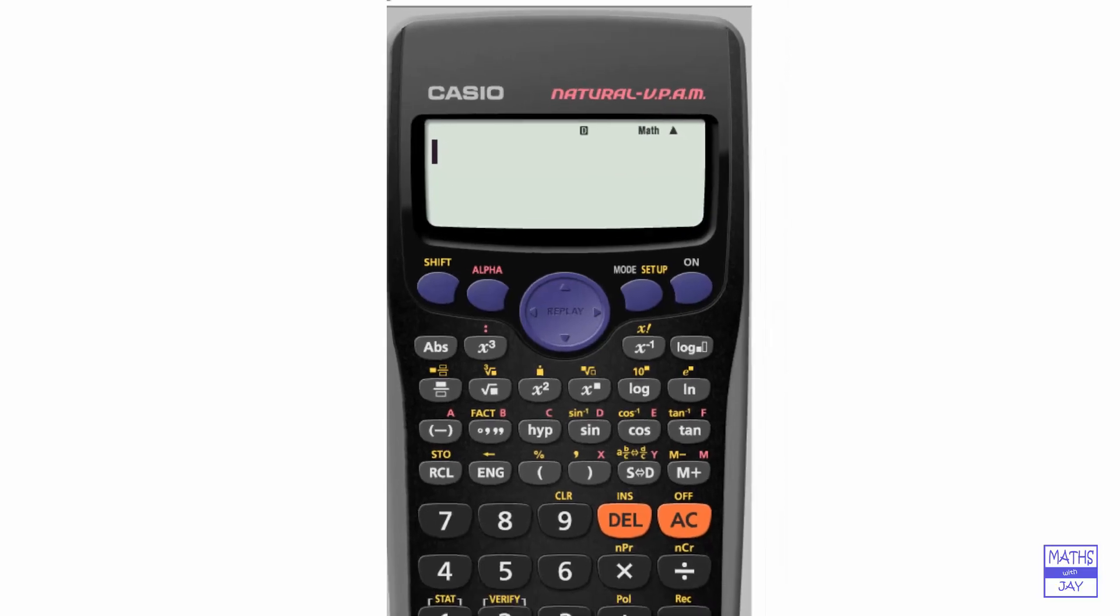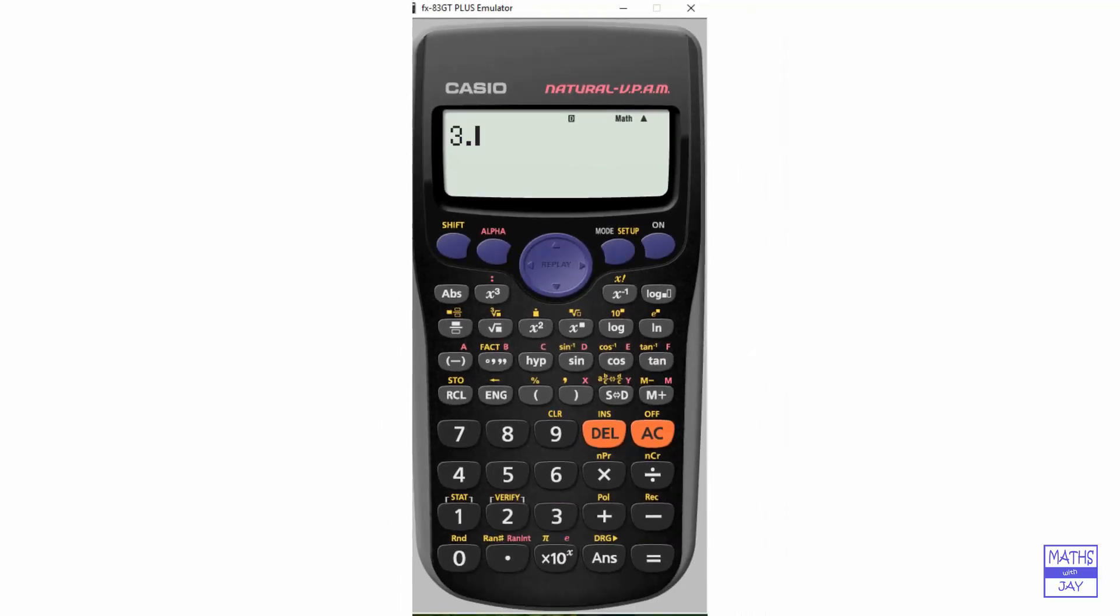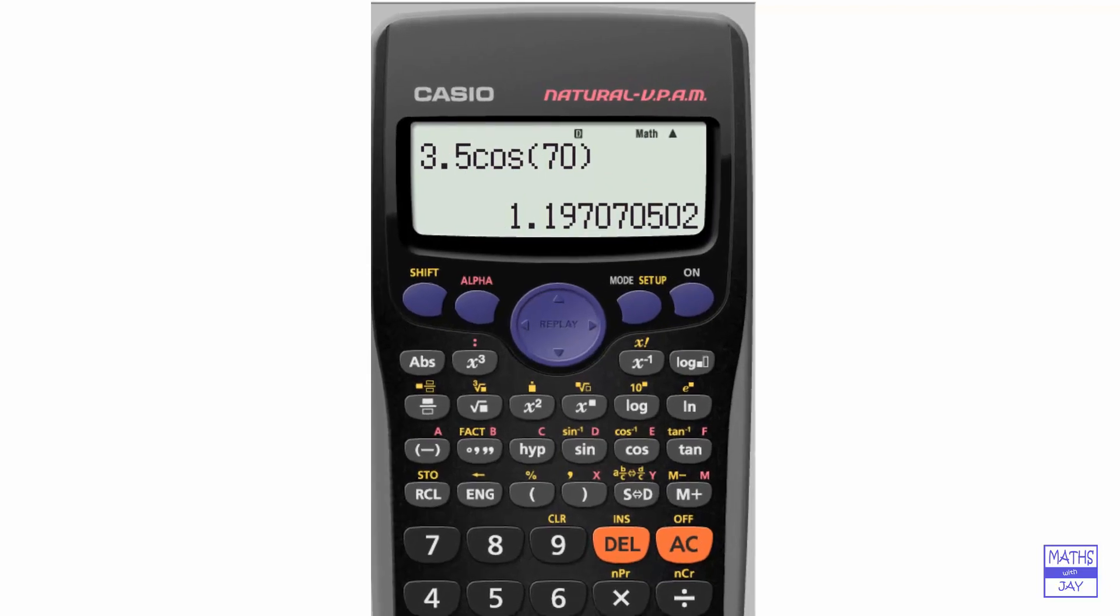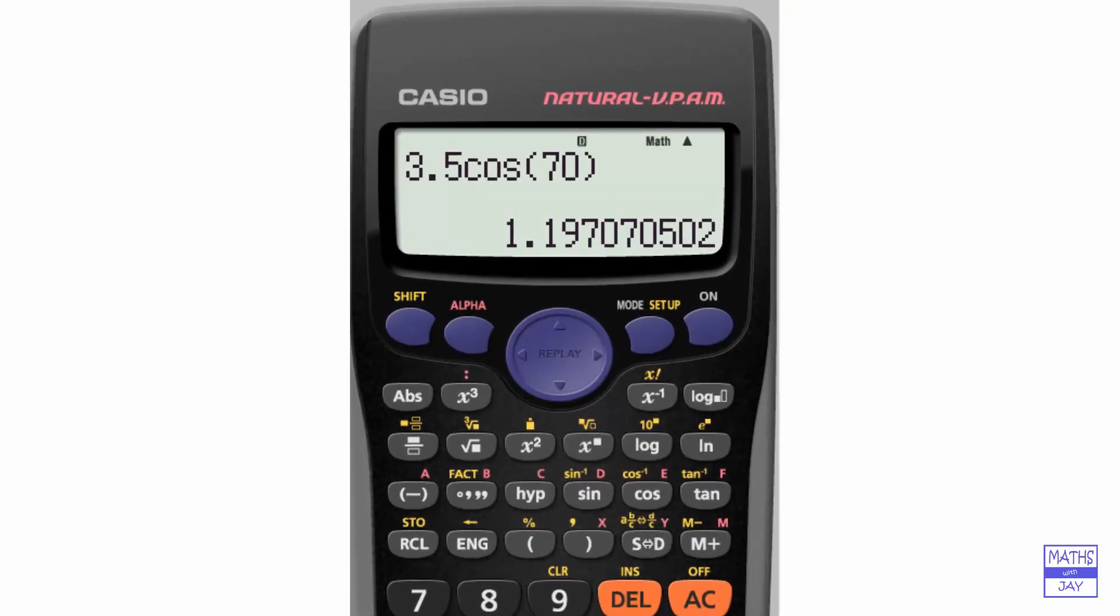It can be anything at all, just something that results in a number and we'll store it. We'll start by using memory A. Let's key in something mathematical looking. I've chosen to put something in that involves a bit of trigonometry, 3.5 cos 70. You don't have to, but if you want to, you can type equals next. Then you can do the storing. The store is in yellow, so we need the shift button. You can see that now at the top of the calculator, we've got STO, showing that we are ready to store in one of the memories. If we choose memory A, then it's stored in memory A.